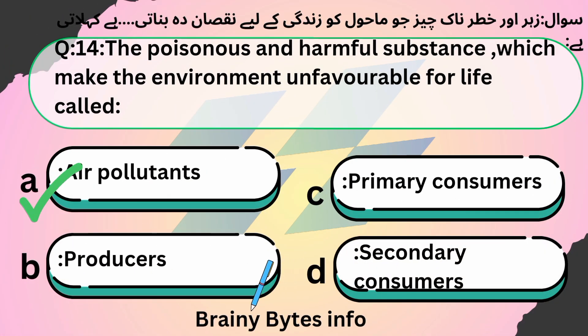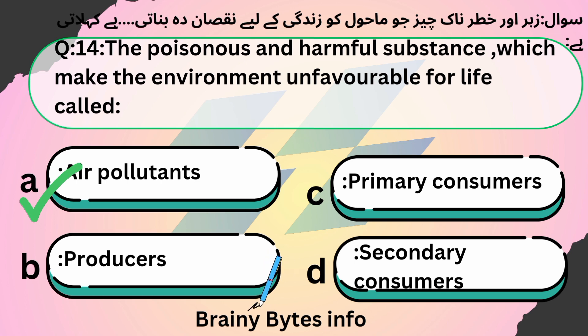The poisonous and harmful substances which make the environment unfavorable for life are called — option A — air pollutants.